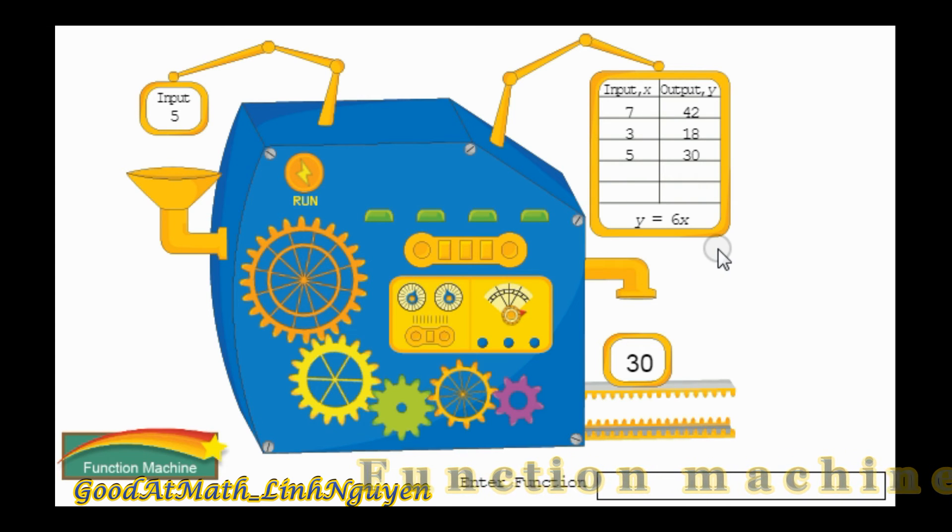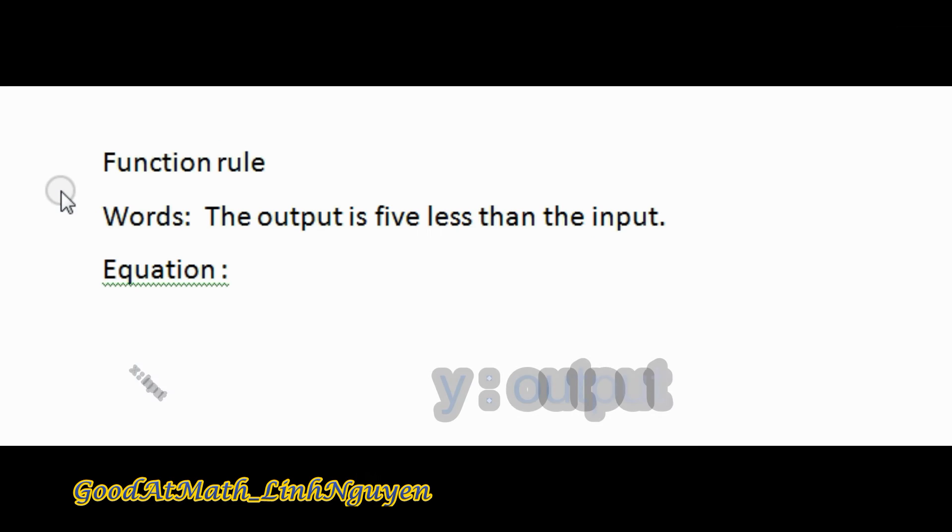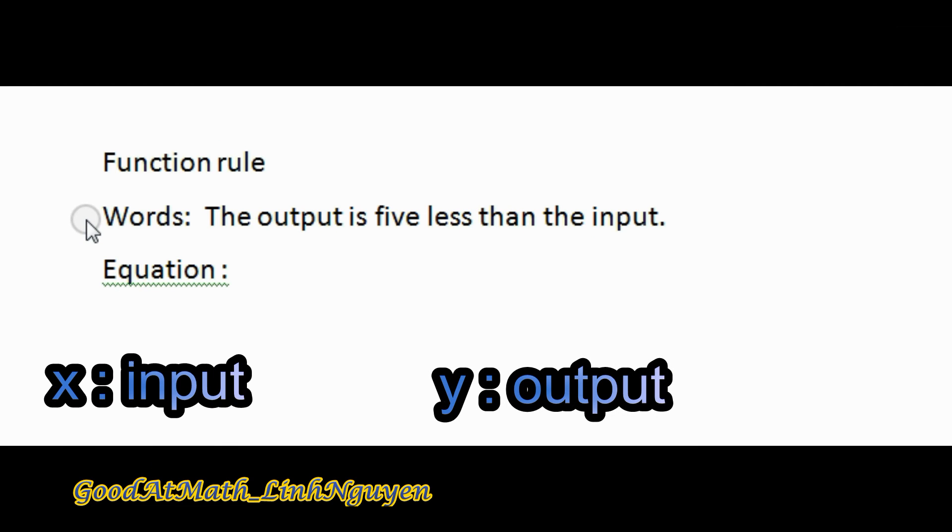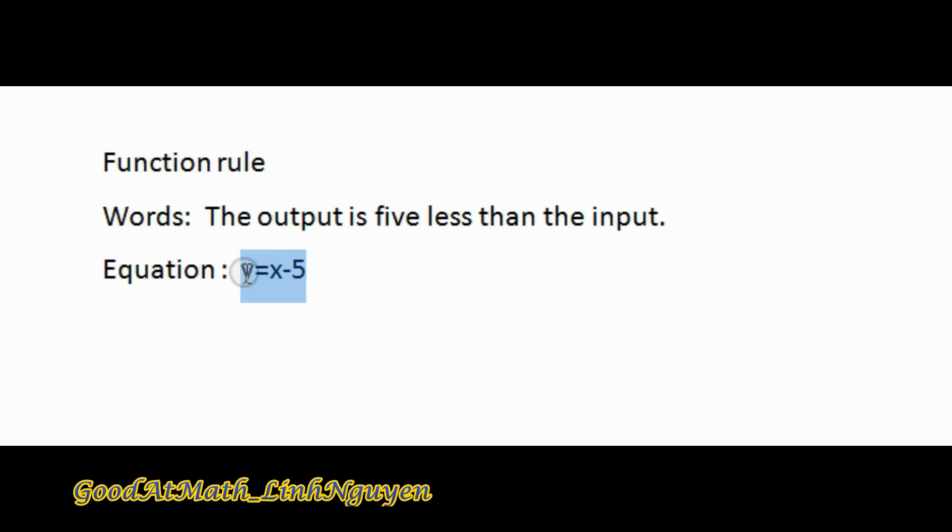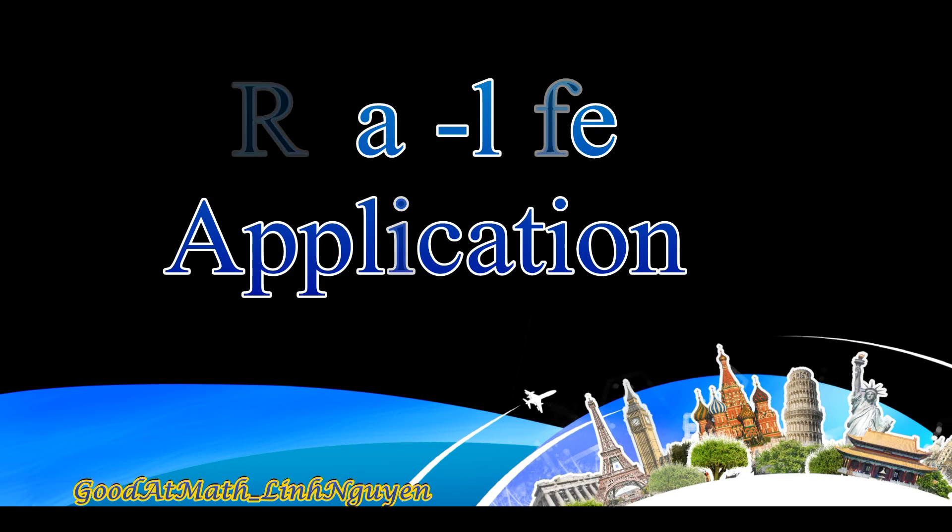We have another function rule. The output is 5 less than the input. So what is the equation? y equals x plus 5. So this is a function rule, y equals 6x.